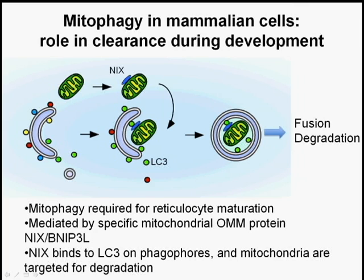BNIP3L, also known as NICS, an outer mitochondrial membrane protein, is a selective adapter protein which contains a linear motif called the LIR motif, which binds to LC3. LC3 is bound to the membrane of the autophagosome and acts as the receptor for proteins carrying this linear LIR motif. Signals are being identified which may control the binding of NICS to LC3. Following binding of NICS to LC3, the targeted mitochondria are sequestered inside the autophagosome and sent for degradation.